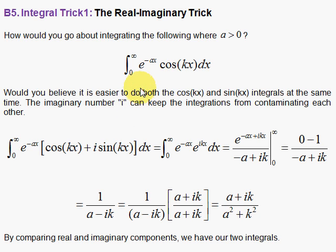We want to integrate from 0 to infinity e to the minus ax cosine kx dx. A, of course, greater than 0, so that e to the minus ax will get smaller and smaller as x goes off to infinity.